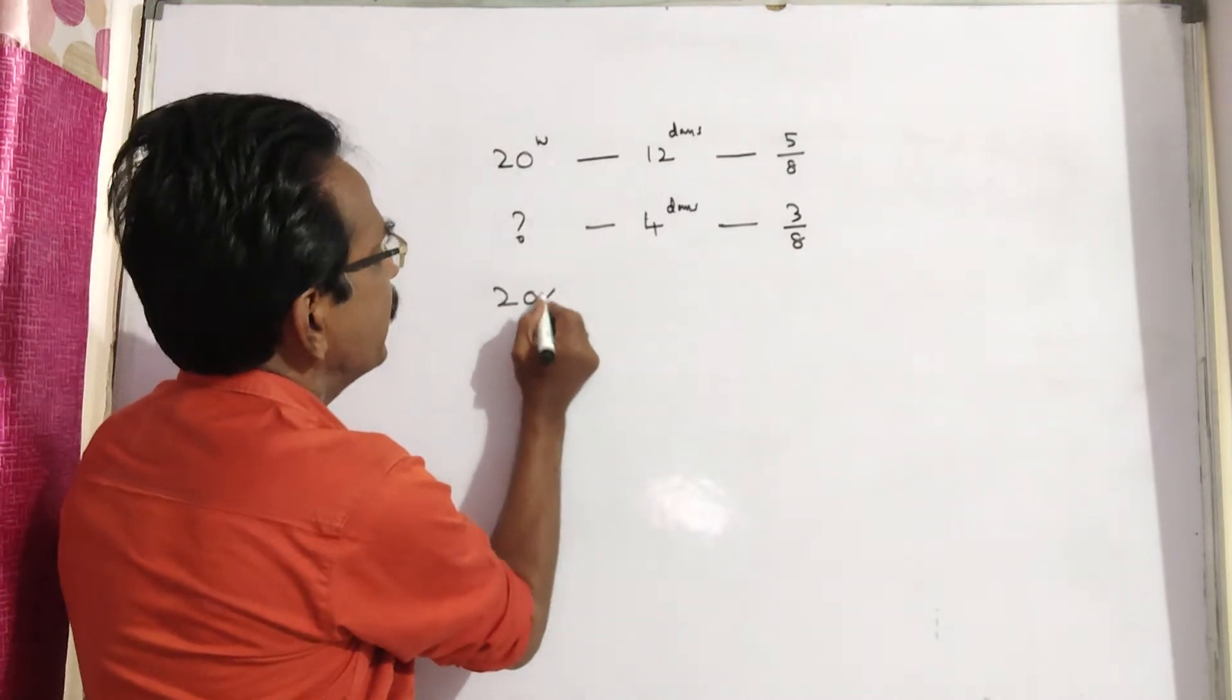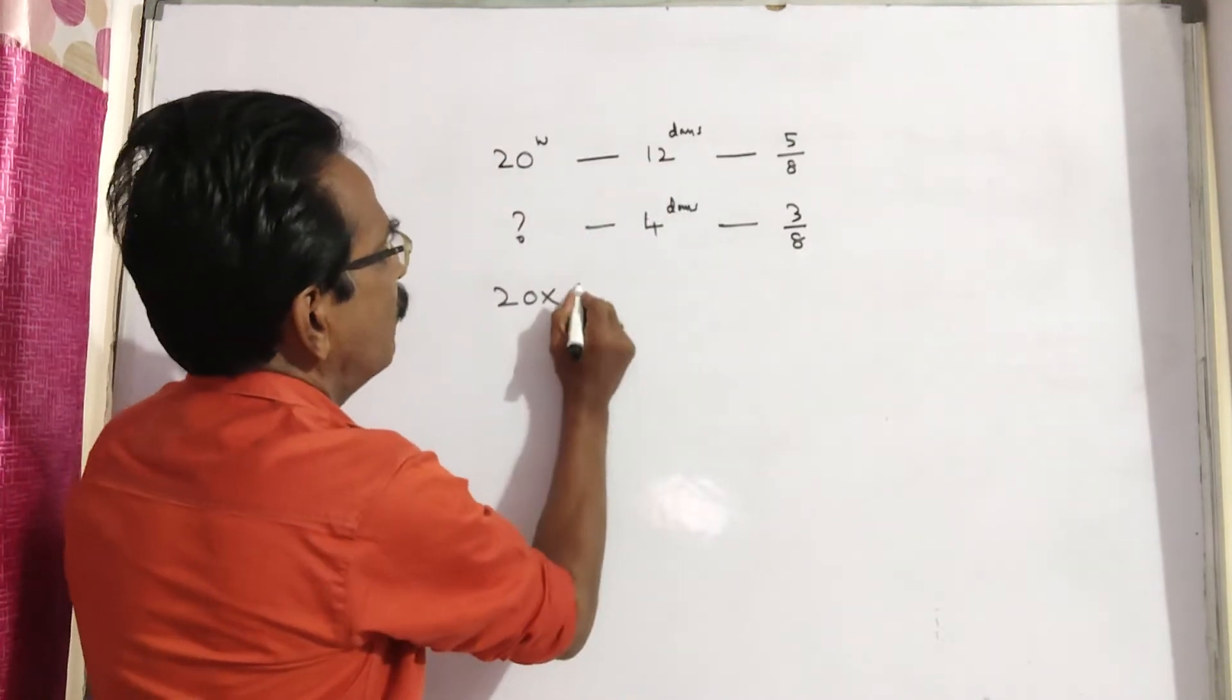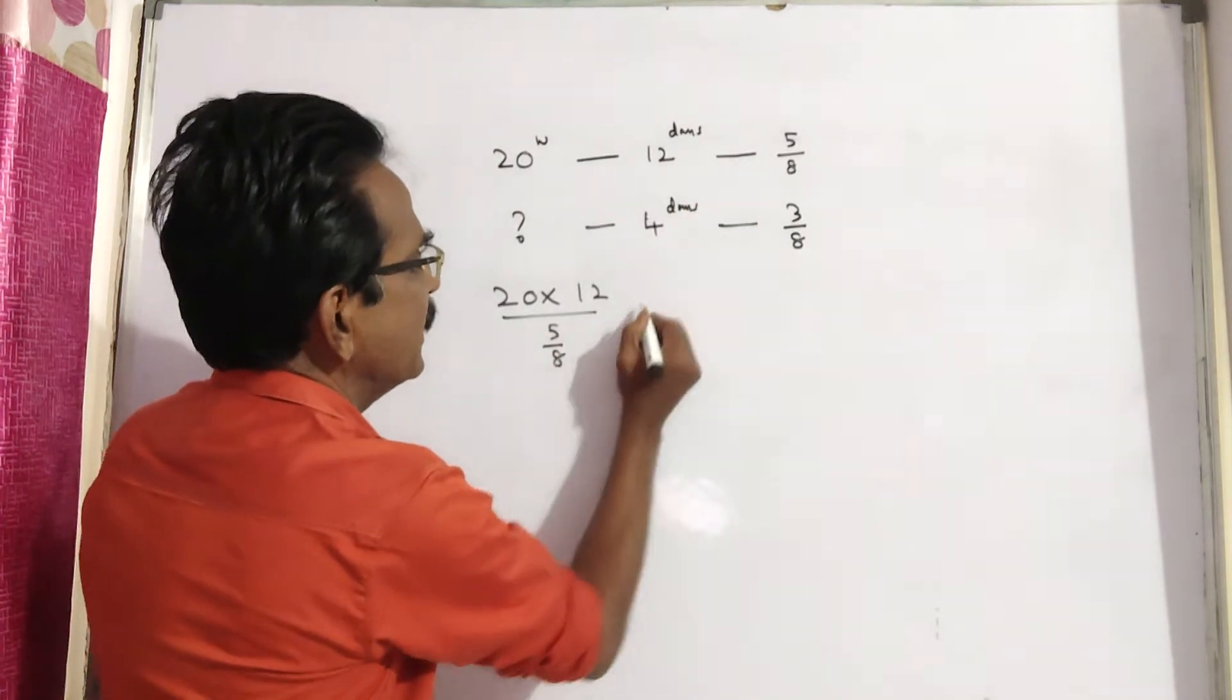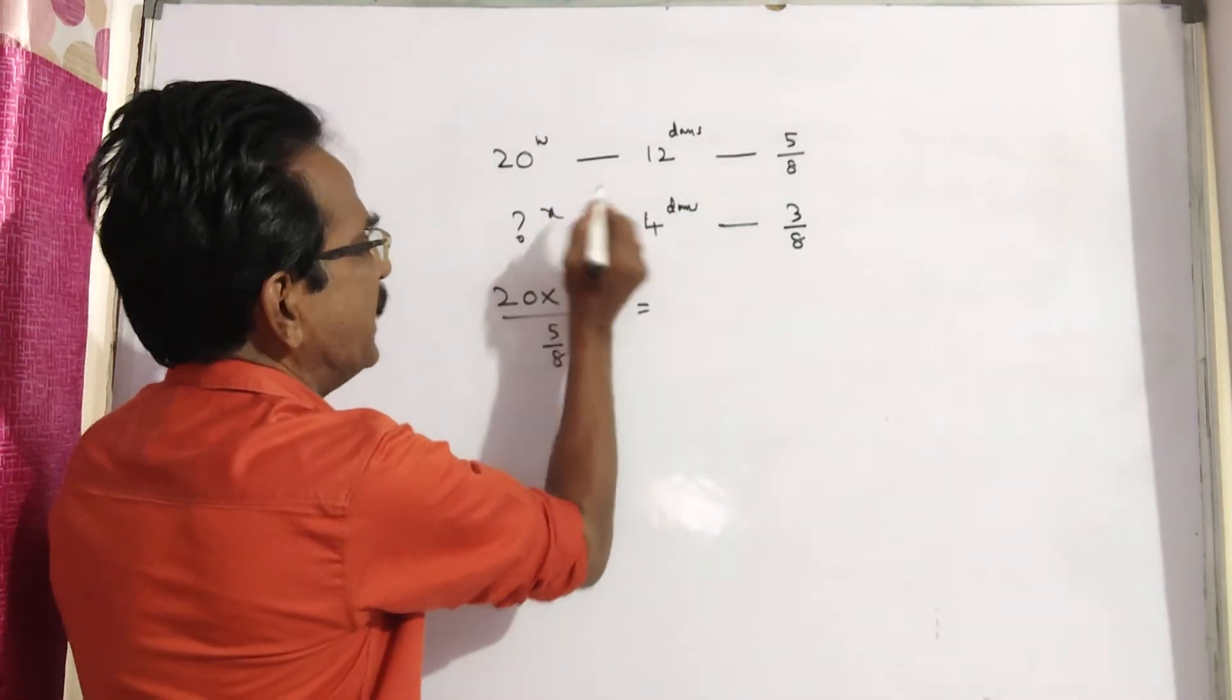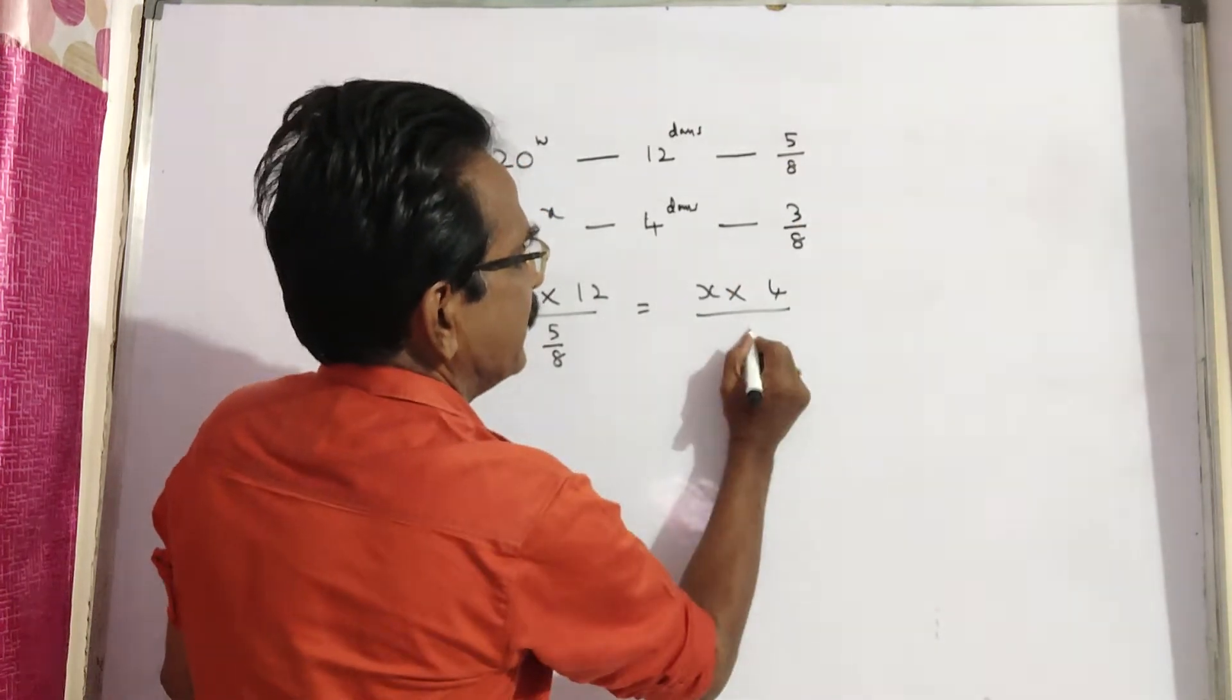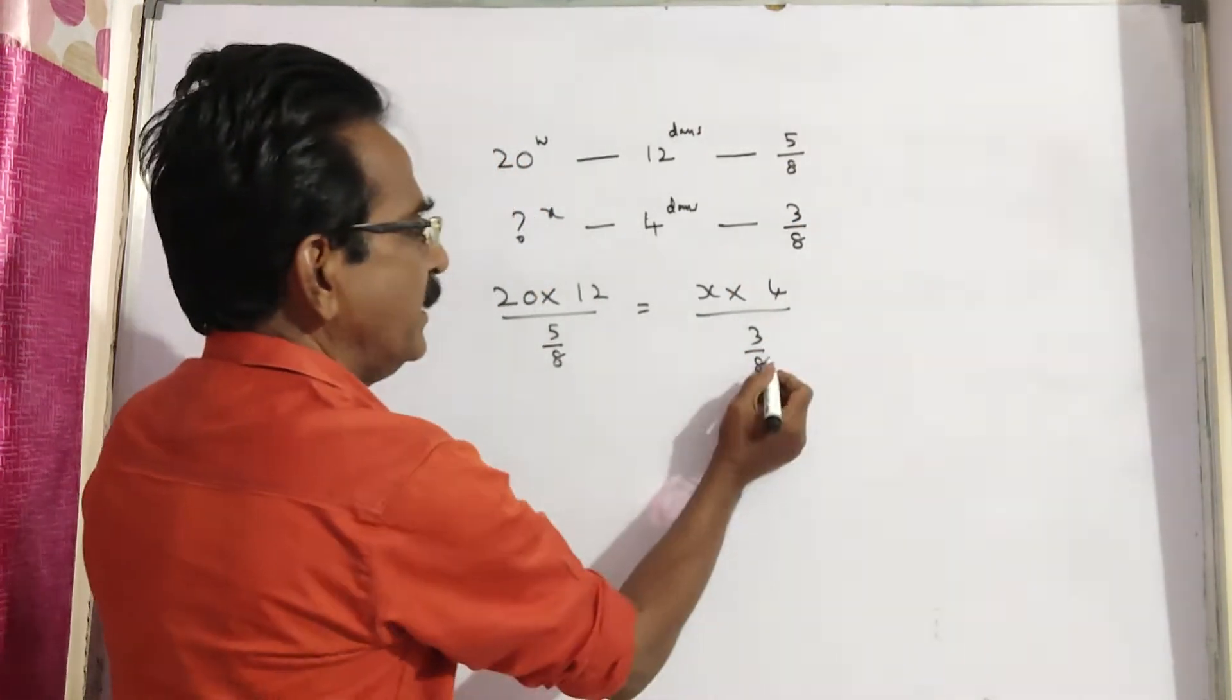So 20 into 12 divided by 5 by 8 is equal to, let's say X, X into 4 by 3 by 8.